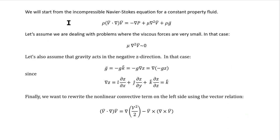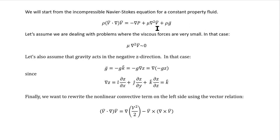We start our derivation from the incompressible Navier-Stokes equations for a constant property fluid. First, we assume we're dealing with problems where the viscous forces are really small. In that case the viscous force term can be neglected, leaving a balance of inertial terms and pressure forces. This is valid at high Reynolds numbers, where the inertial terms are large and viscous terms are small.